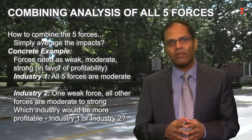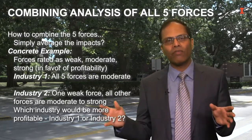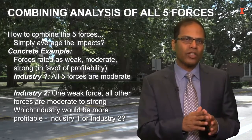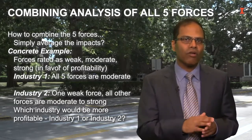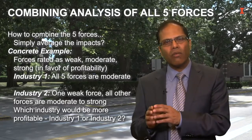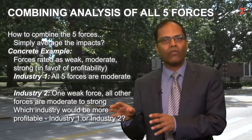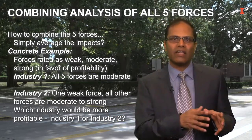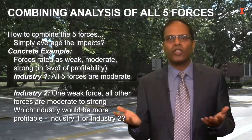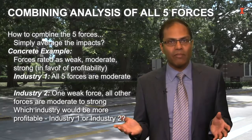Let me make this a bit more concrete with an example. Imagine we have two industries with the same average rating over all five forces. But one industry, let's call it industry one, has a moderate level of competition in all five forces — the level of competition in all the forces are essentially equal. The other industry, industry two, has only one but very competitive force. Let's say it has very low entry barriers, but all the other forces in industry two are less competitive — that is, they're better for profits than industry one. So then overall, which industry would be the more profitable of the two? Industry one or industry two? Would they be the same in profitability?